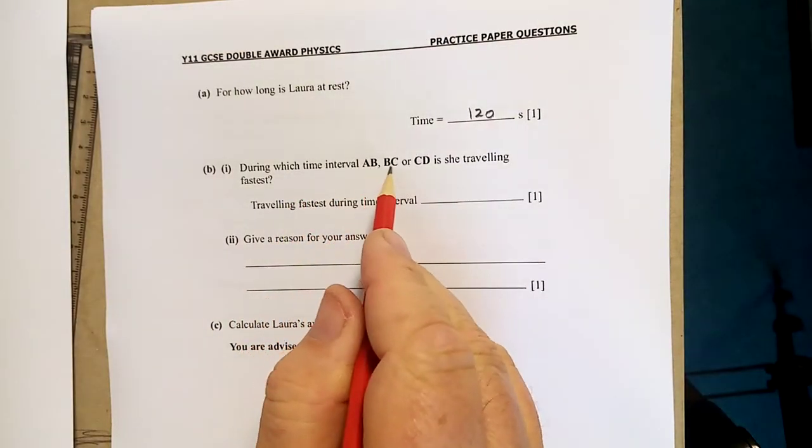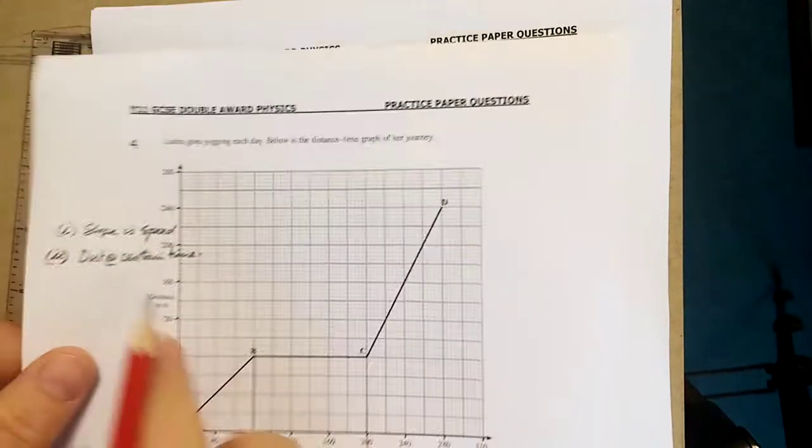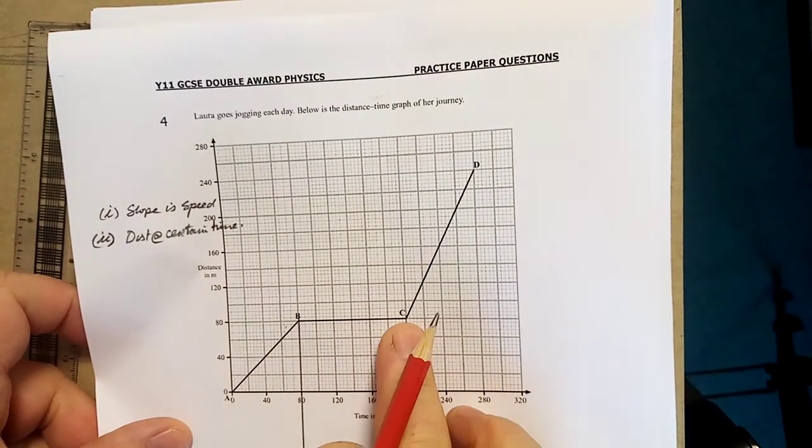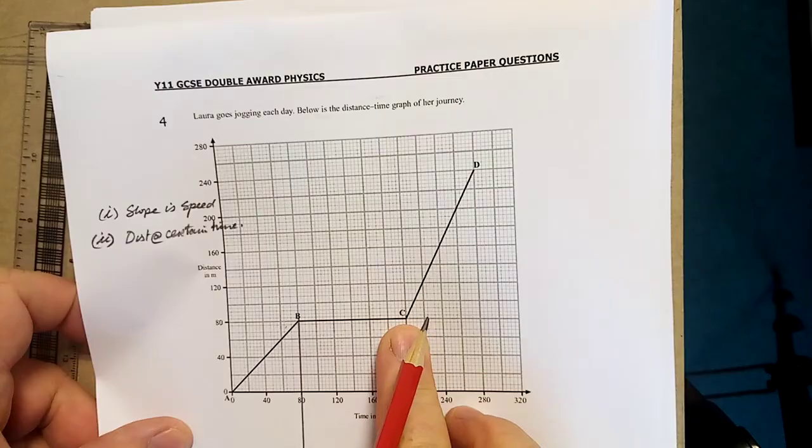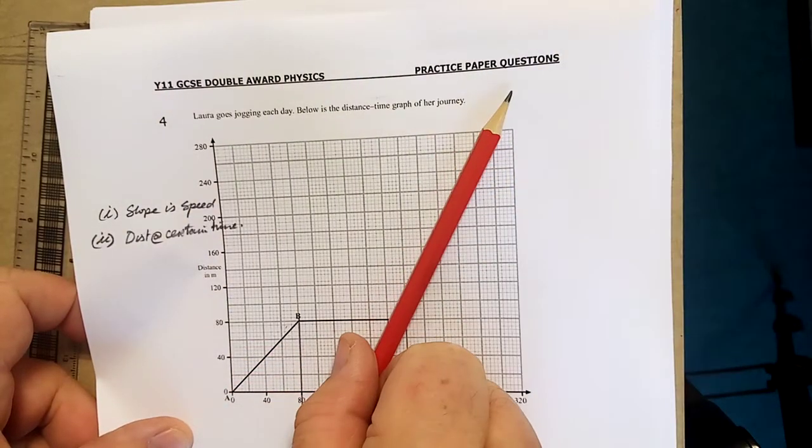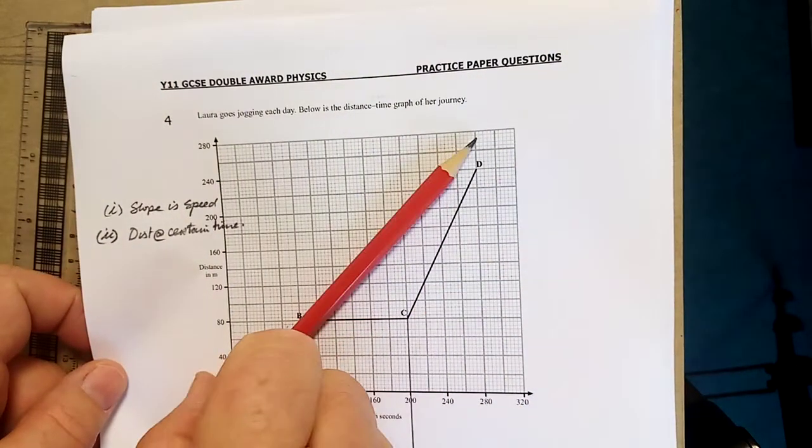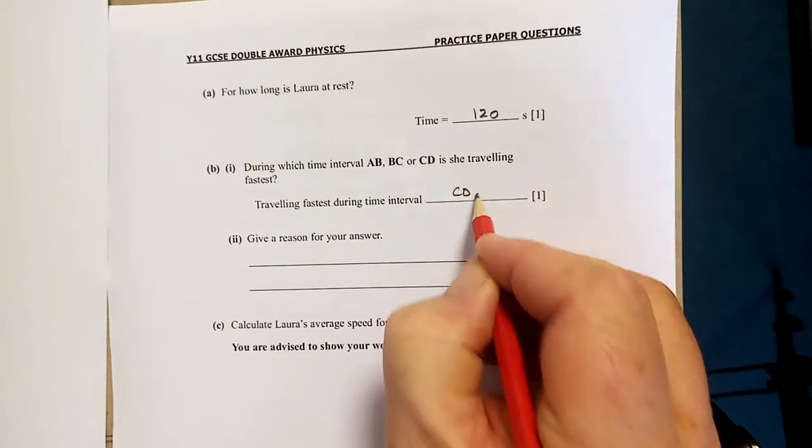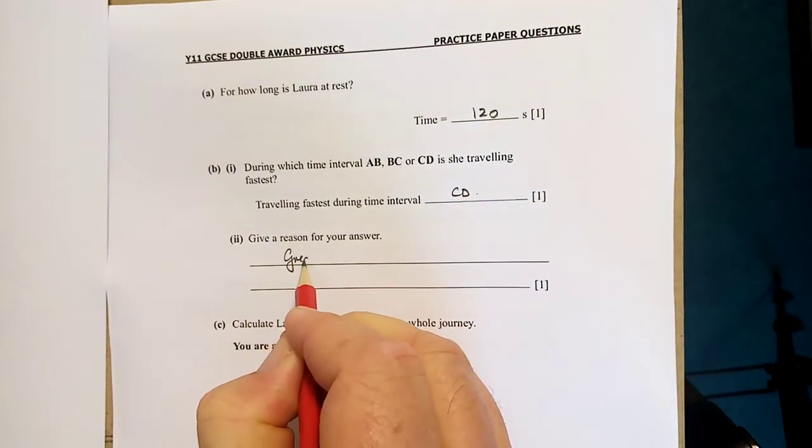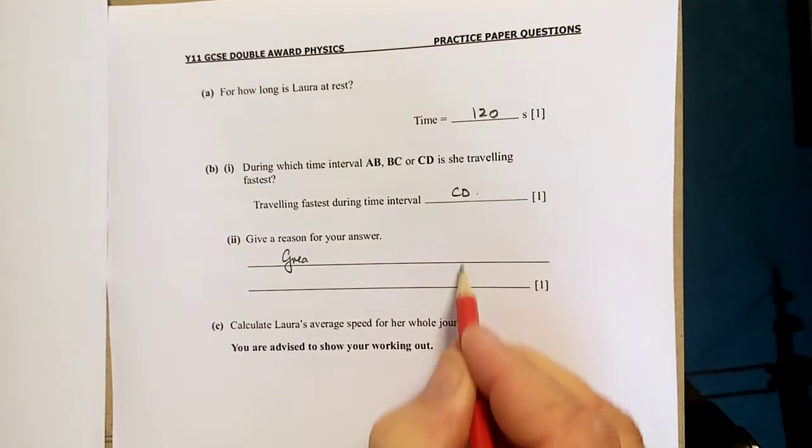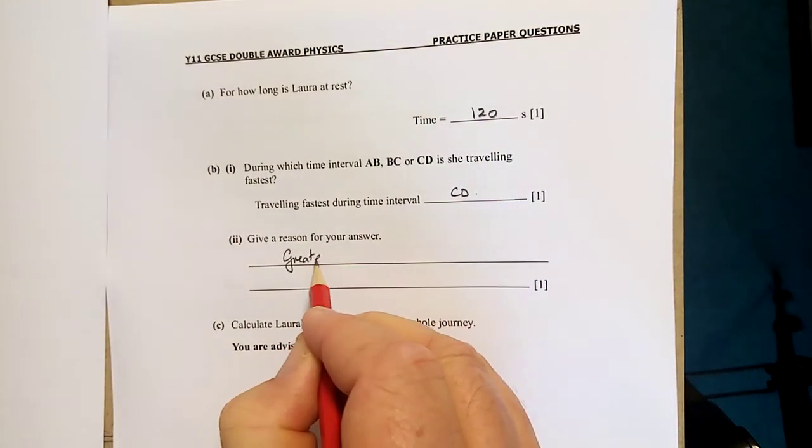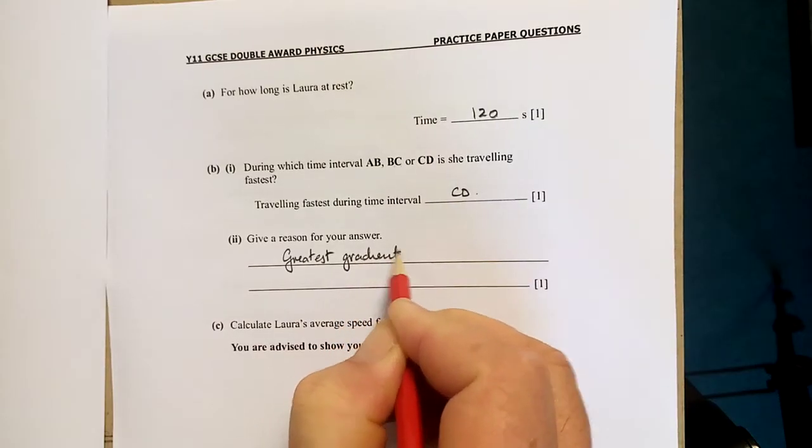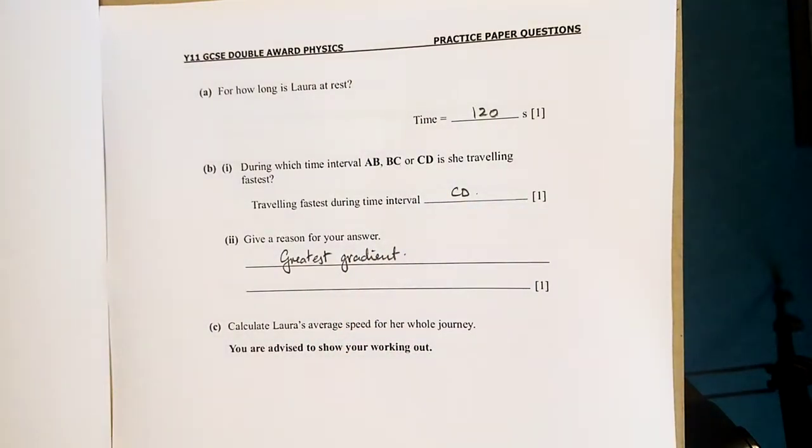During which time interval A-B, B-C, or C-D is she traveling fastest? Now, the slope is the speed. Which one of them is the greatest slope? A to B has a slope. B to C is no slope. And C to D - look, that's its gradient. So C to D is the fastest. C to D - greatest gradient. Now, again look, two lines. Full sentence. If you shortcut it, you'll maybe lose the mark.